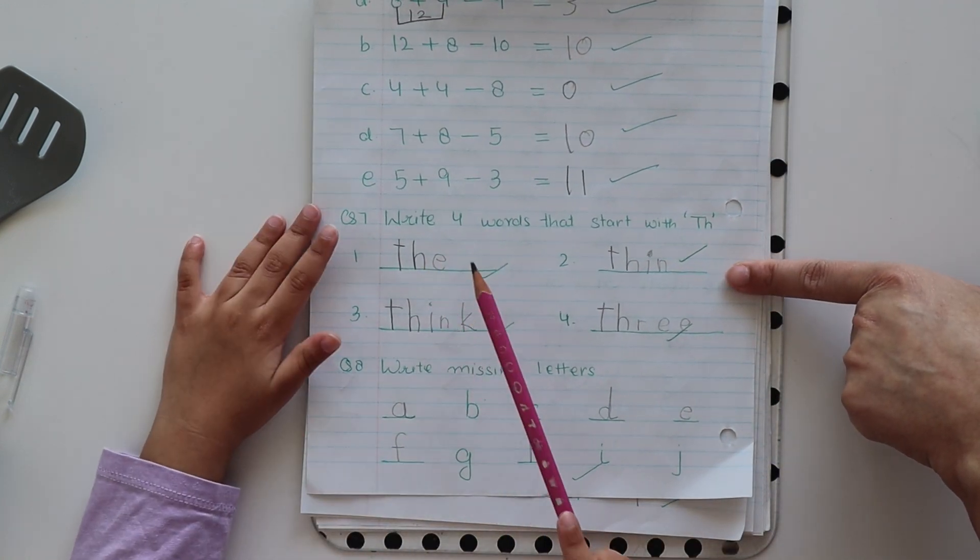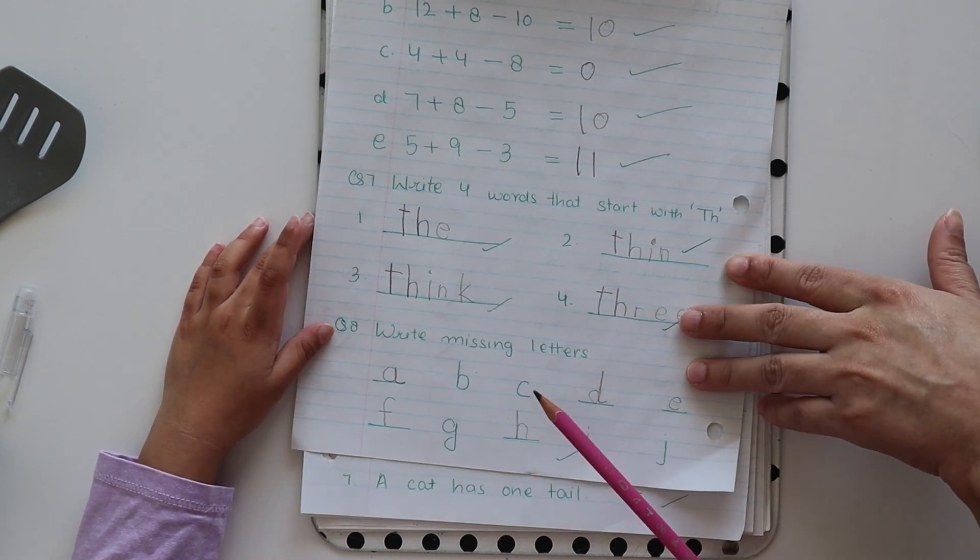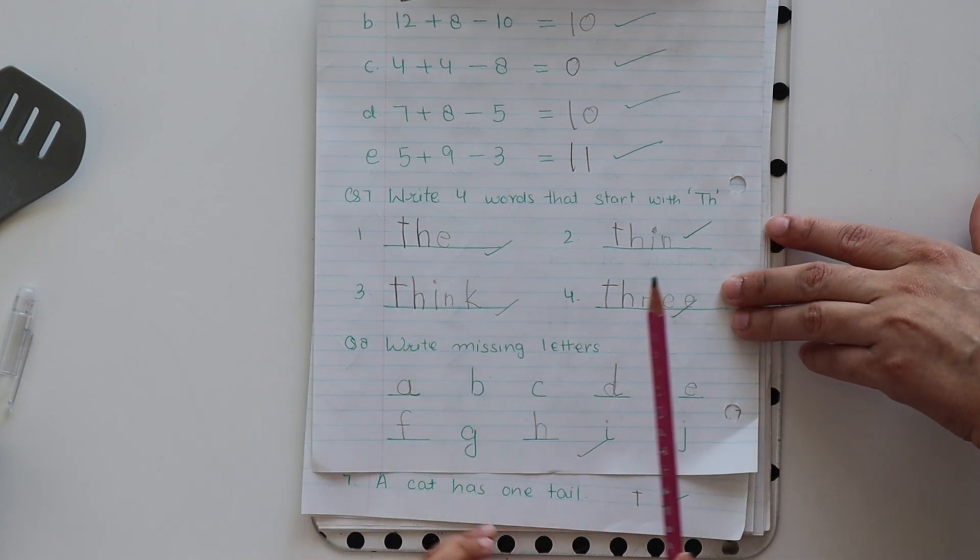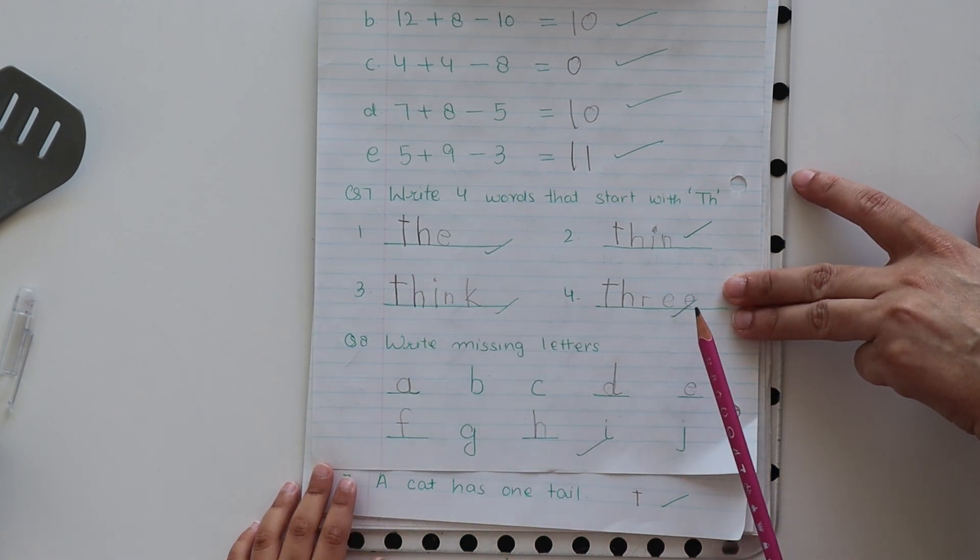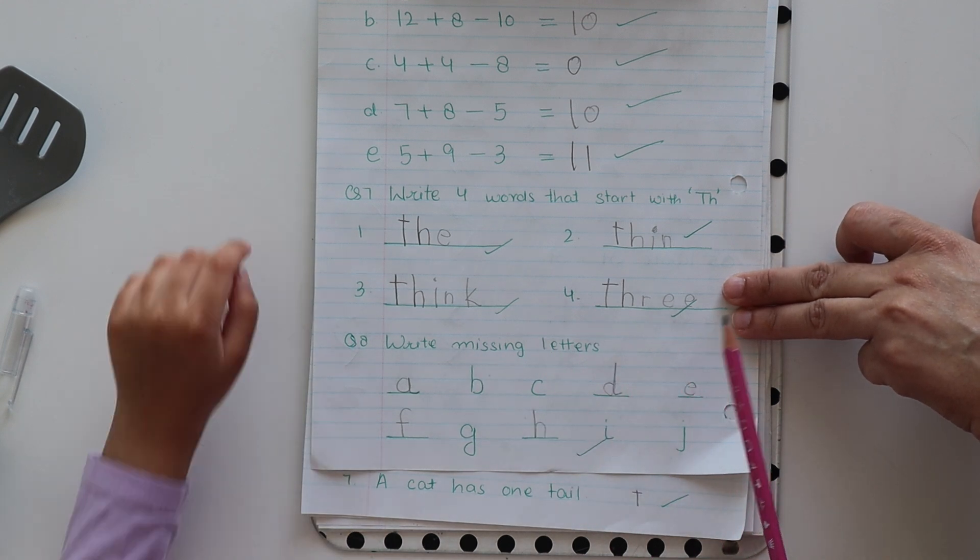So next. It says write four words that start with TH. So you wrote, tell me the words. Can you read the words? Thin. Thick. Three.